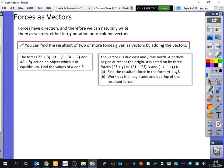So it says that forces have direction and therefore we can naturally write them as vectors, either in IJ notation or as column vectors. I prefer column vectors. You should prefer column vectors. They are the better way of doing your calculations. And it says here you can find the resultant of two or more forces given as vectors by adding the vectors.